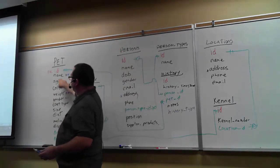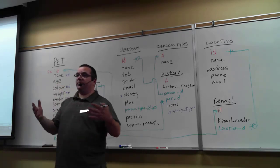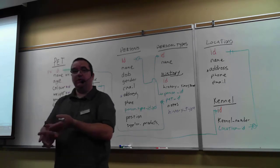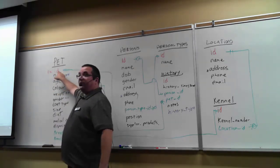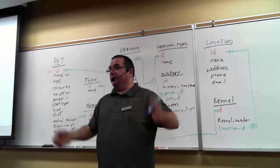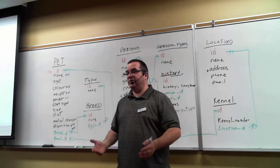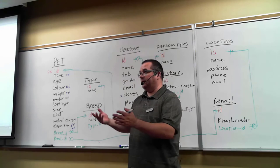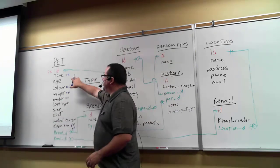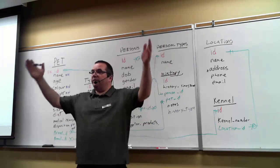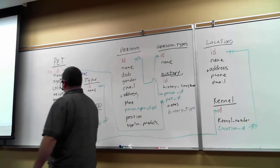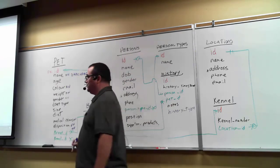The next step is figuring out the data types. I'm not going to put anything next to the ID because depending on what database system you're using the data type changes — in Microsoft SQL Server it's called identity, in MySQL it's an integer that auto-increments, in Postgres you have the choice of integer with identity always or big serial. Each server does it differently. For the name you're probably going to use a VARCHAR — VARCHAR 25 is fine for an animal's name.